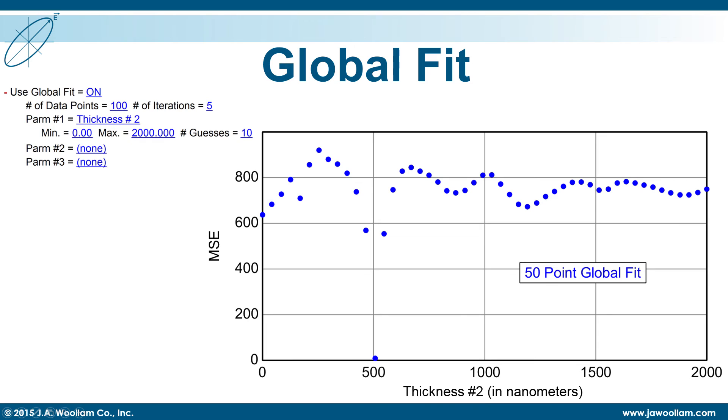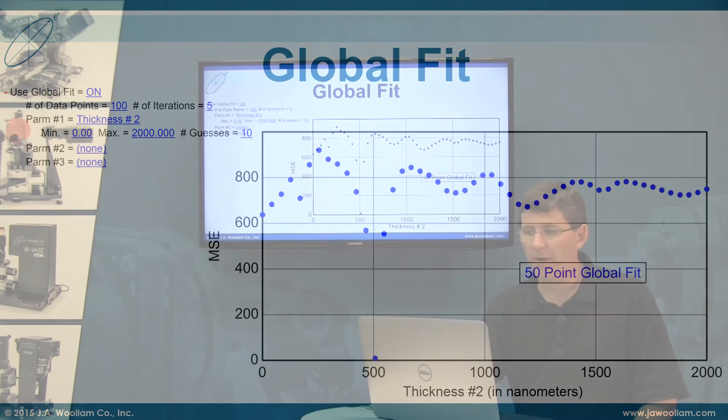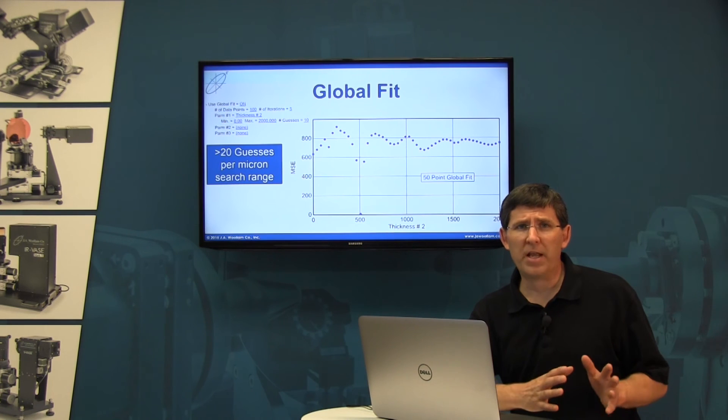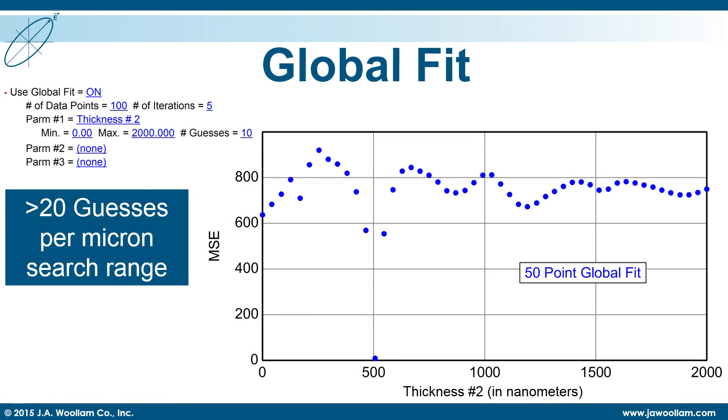The global fit works by searching the MSE at all 50 of those values, as I've shown on this graph here. Now as a general rule of thumb, I like to use at least 20 guesses for my thickness for every one micron that I'm searching over.